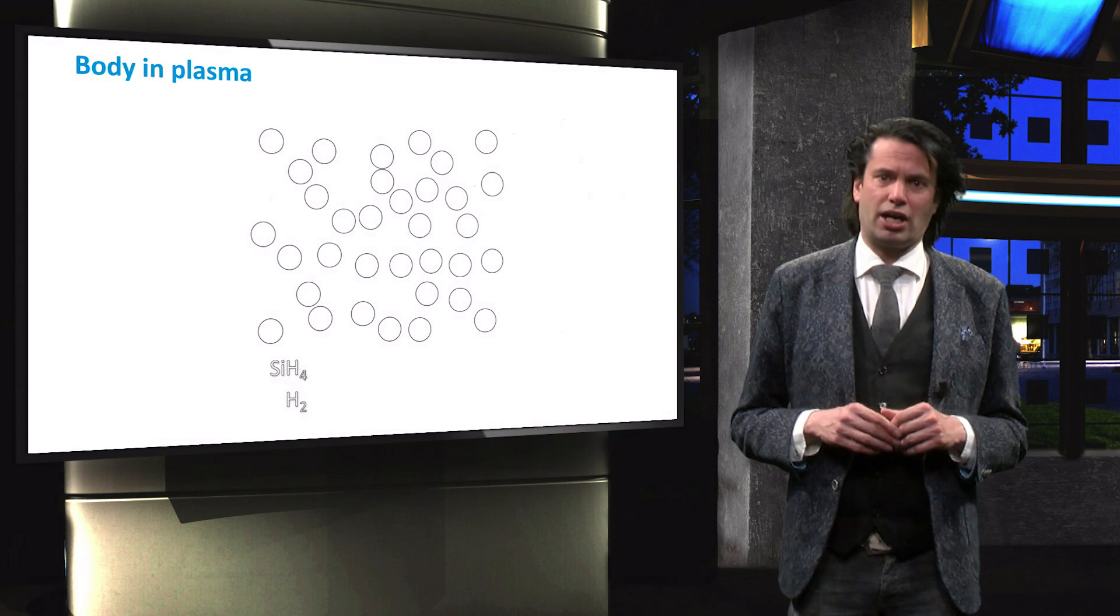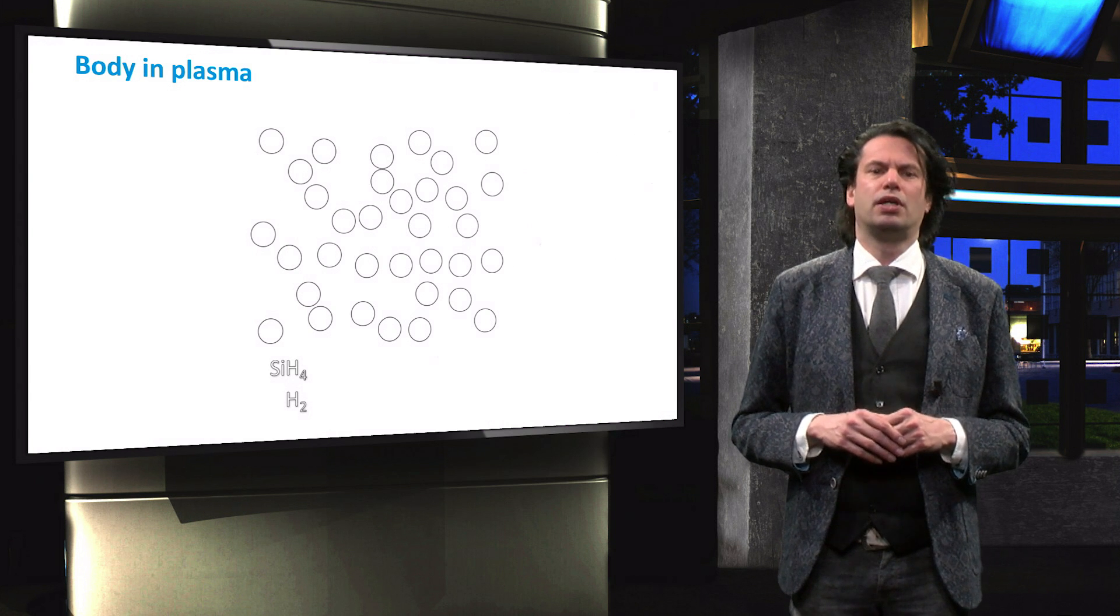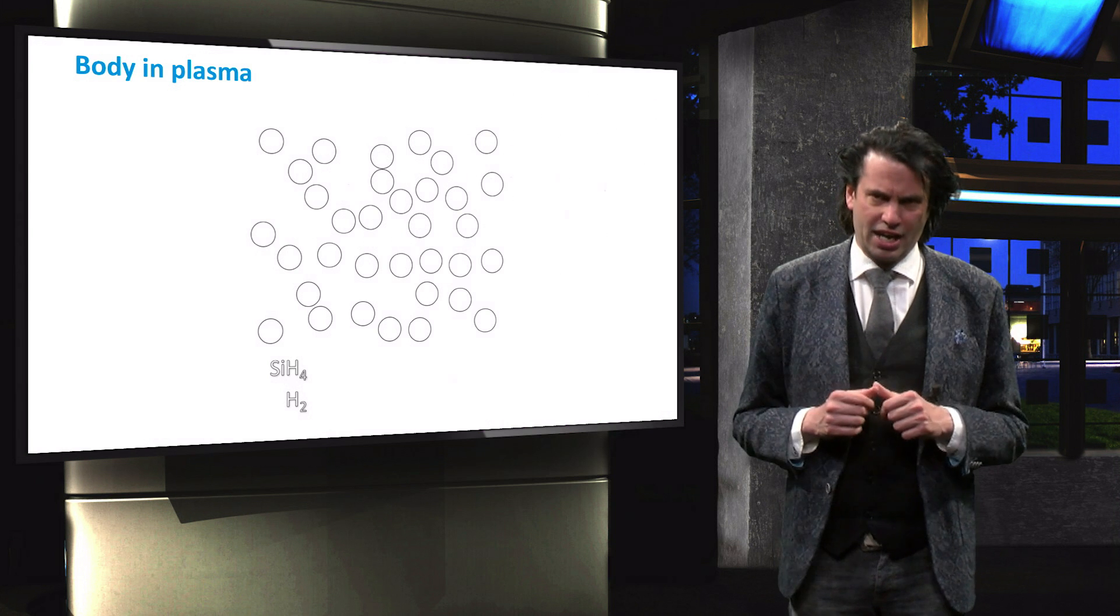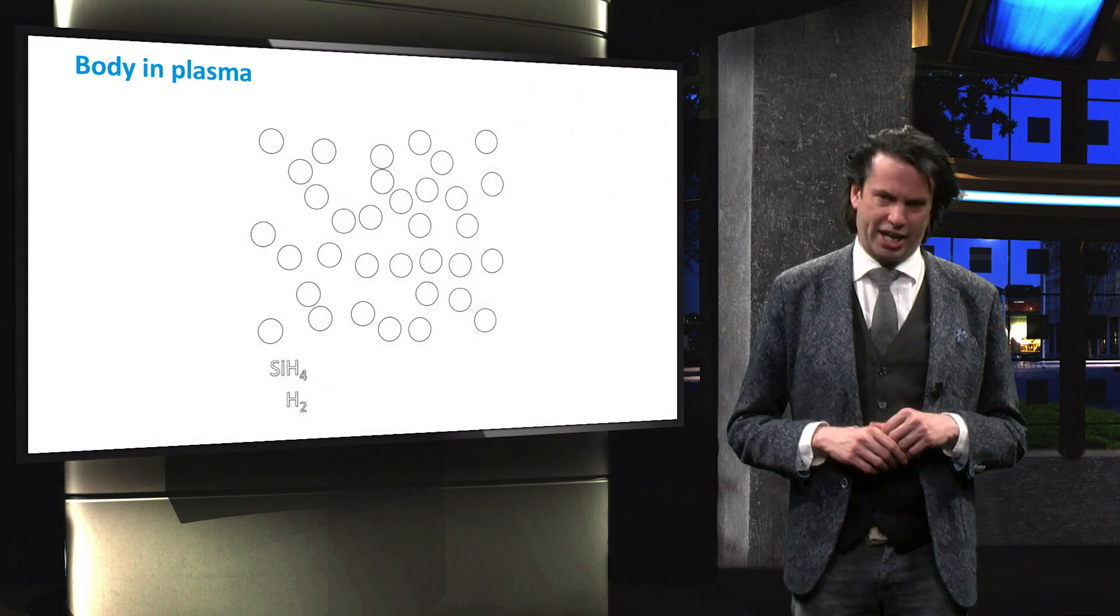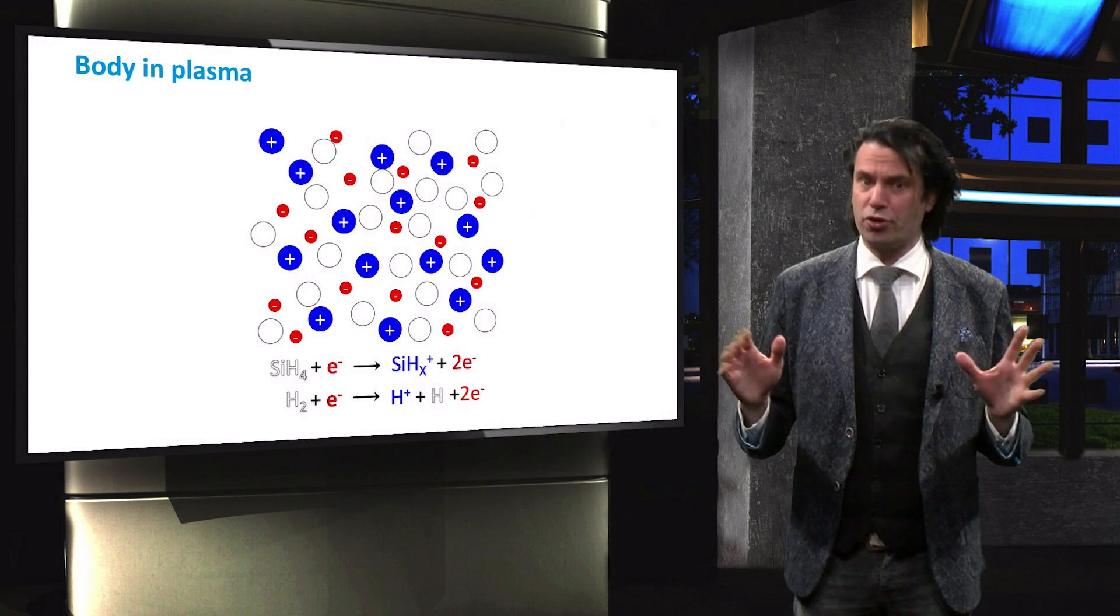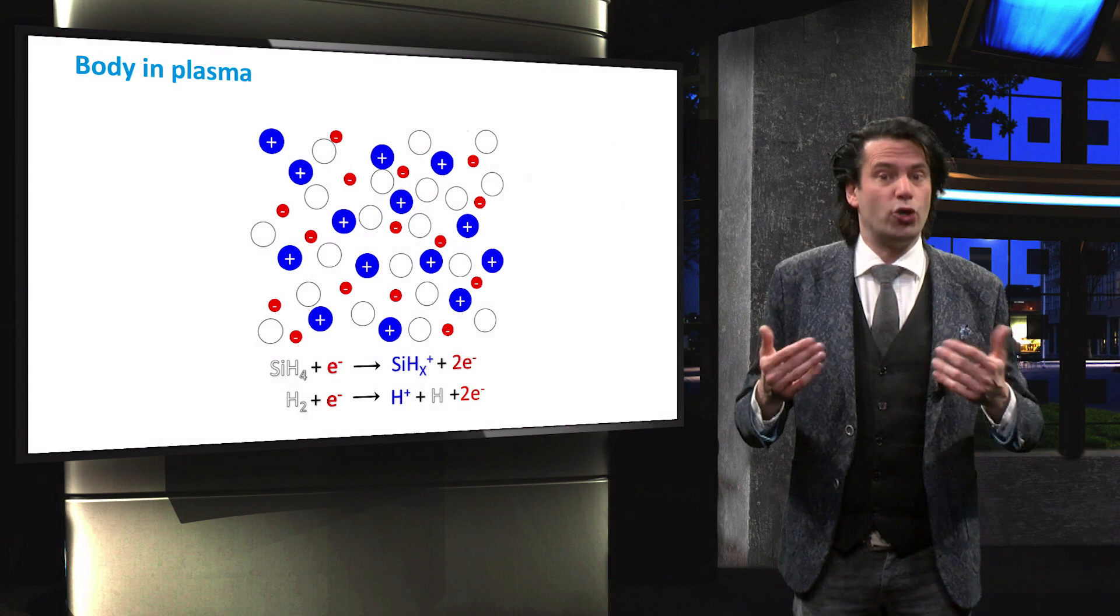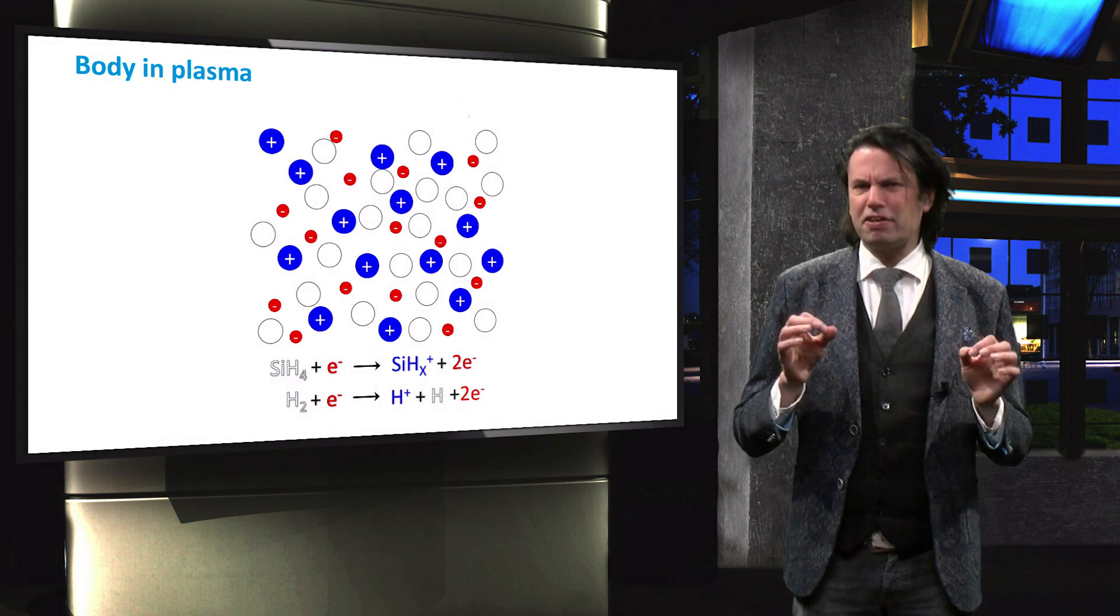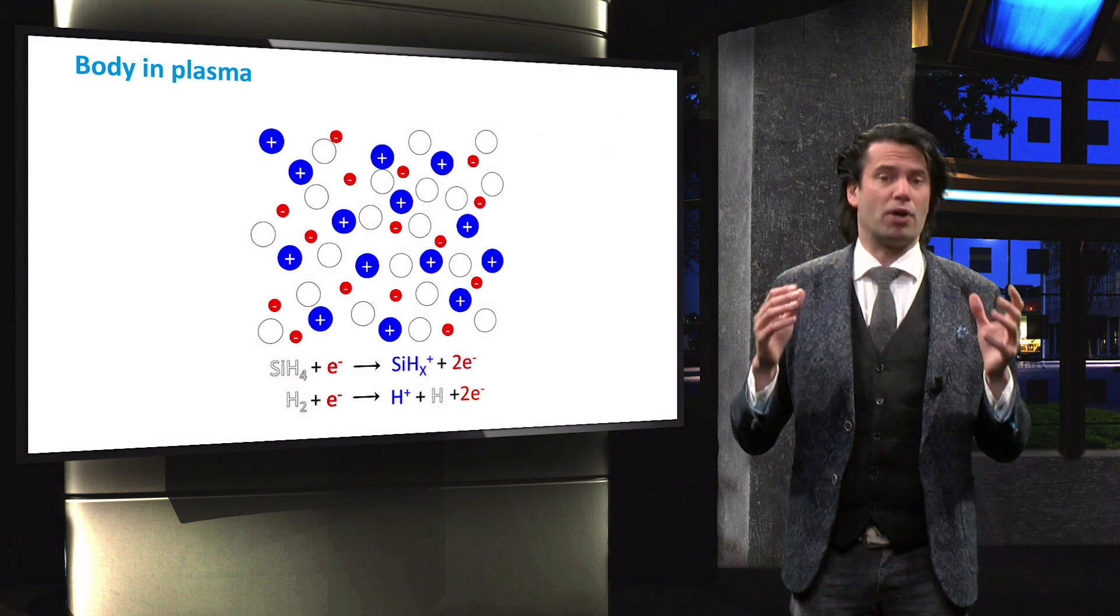In a silane and hydrogen plasma, some electrons are excited from the neutral gas molecules. These electrons bounce against the particles until they are energetic enough to excite and ionize other atoms. This leads to the dissociation of the precursor gases. The electrons are excited by applying an external bias voltage. Since now a significant fraction of the gas particles are ionized, we have a plasma.